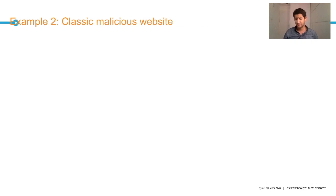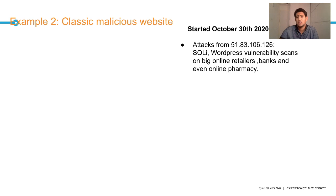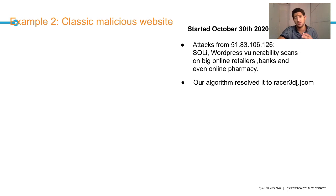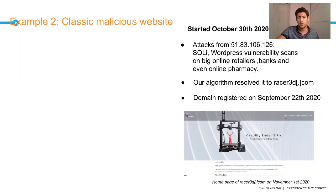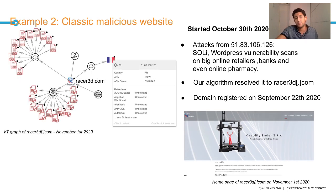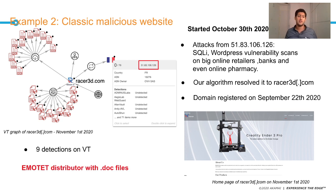The second example is a classic malicious website. We observed end-of-October attacks coming from IP 51.83.x.x — SQL injection and WordPress vulnerability scanning against several customers. The algorithm resolved to the domain resale3d.com, a newly registered domain. On VirusTotal it's easy to see this is malicious — nine detections — and it's identified as a distributor of Emotet malware via document files. This is what happens in about 20% of the data: classic malicious websites.